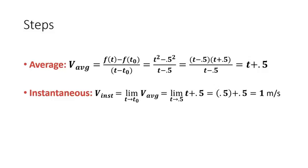Next, we find the instantaneous velocity by taking the limit of the average velocity function as t approaches that initial time, 0.5. So once we plug in 0.5 for t, we see that our instantaneous velocity is 1 meter per second. These are some uses of limits.